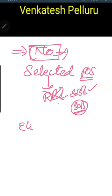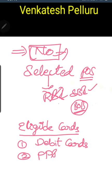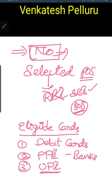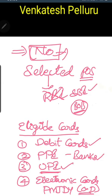The next important point is: which cards are eligible for cash withdrawal at POS terminals? All debit cards are eligible. Secondly, prepaid payment instrument cards issued by banks are also eligible. Withdrawal by utilizing UPI mode is also eligible for cash withdrawal from POS terminals. So the eligible instruments are: all debit cards, prepaid payment instruments offered by banks, and UPI mode of withdrawal.